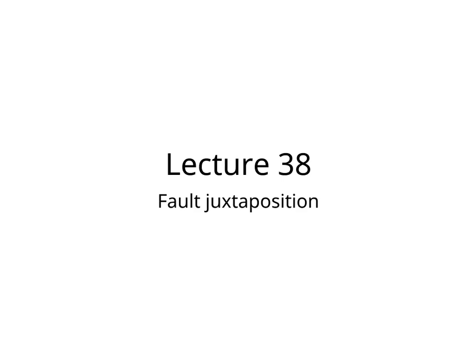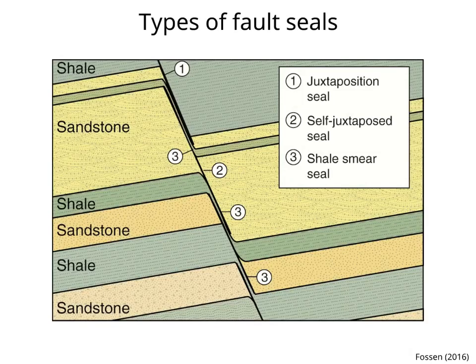Lecture 38: Fault Juxtaposition. Faults offset reservoir units and they can either facilitate or prevent fluid flow. A fault seal prevents fluid flow across a fault. There are three types of fault seals. The first is juxtaposition seals, where reservoir units are juxtaposed against non-reservoir units across the fault.